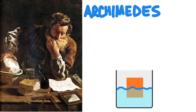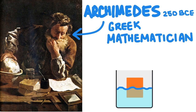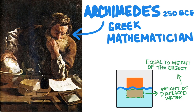Archimedes was a Greek mathematician who lived around 250 BC. He made a discovery that when an object floats in the water, the weight of the water that is displaced by the object is equal to the weight of the object. That displaced water can hold the object up — in other words, it makes it float.